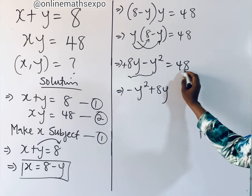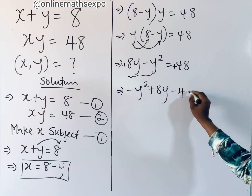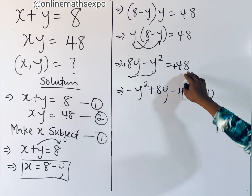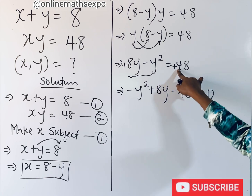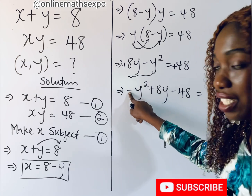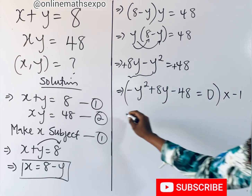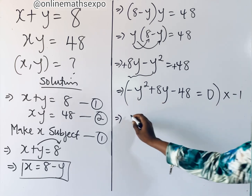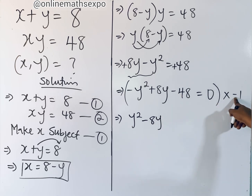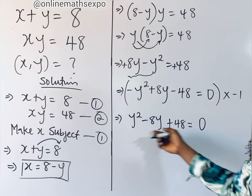The signs are not changing yet because both terms are on the left side. To move 48 to the left, we subtract it from both sides, giving us negative y squared plus 8y minus 48 equals 0. To remove the leading negative sign, we multiply the entire equation by negative 1, giving us y squared minus 8y plus 48 equals 0.